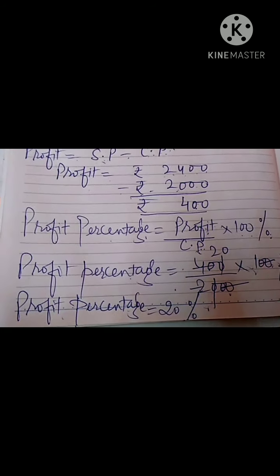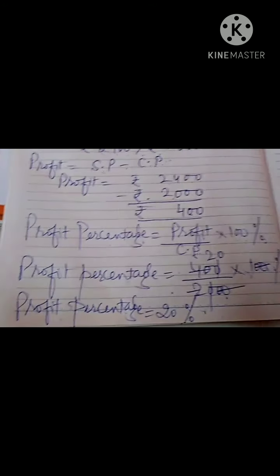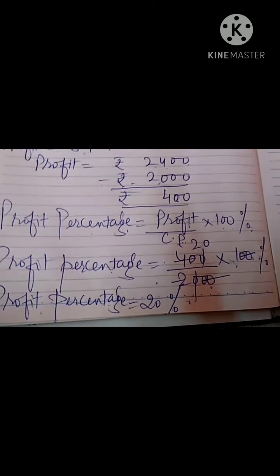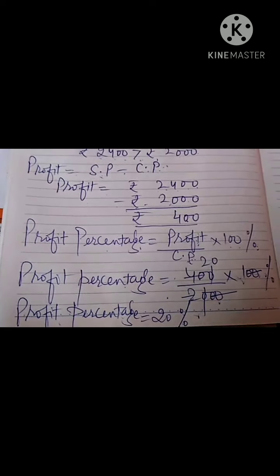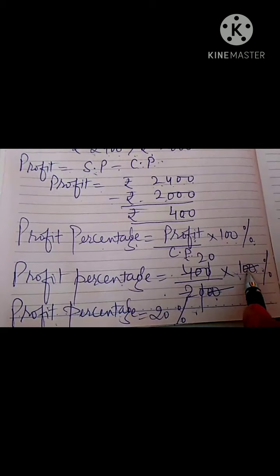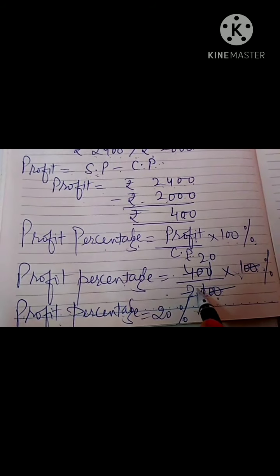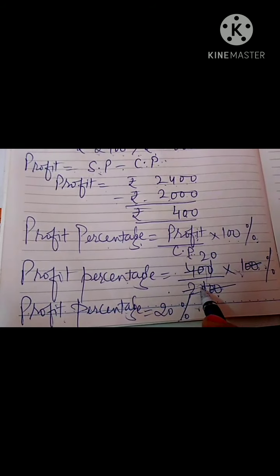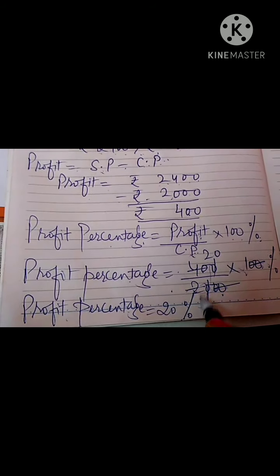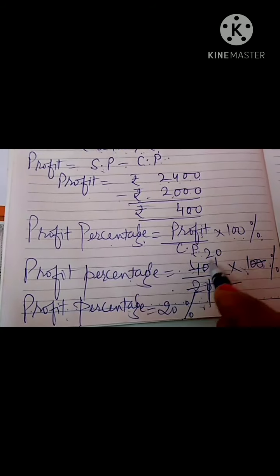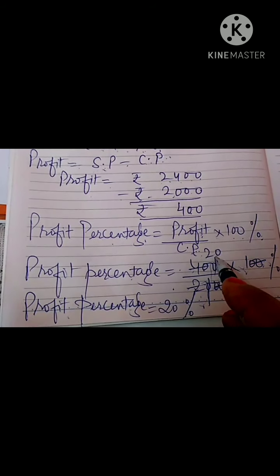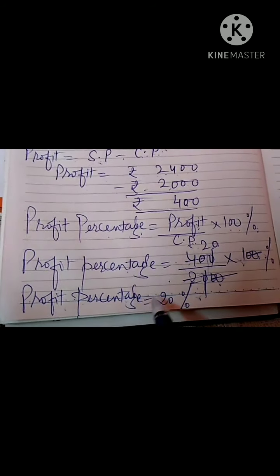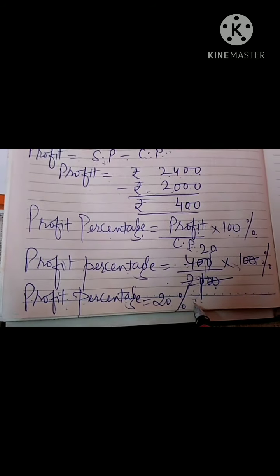After simplification, you will get profit percentage equal to 20%. Please try to do the calculation part yourself. Here I have cancelled two zeros with two zeros and one zero with one zero, then simplified — two twos are four and zero is left, so with two it will be 20, and profit percentage is equal to 20%.